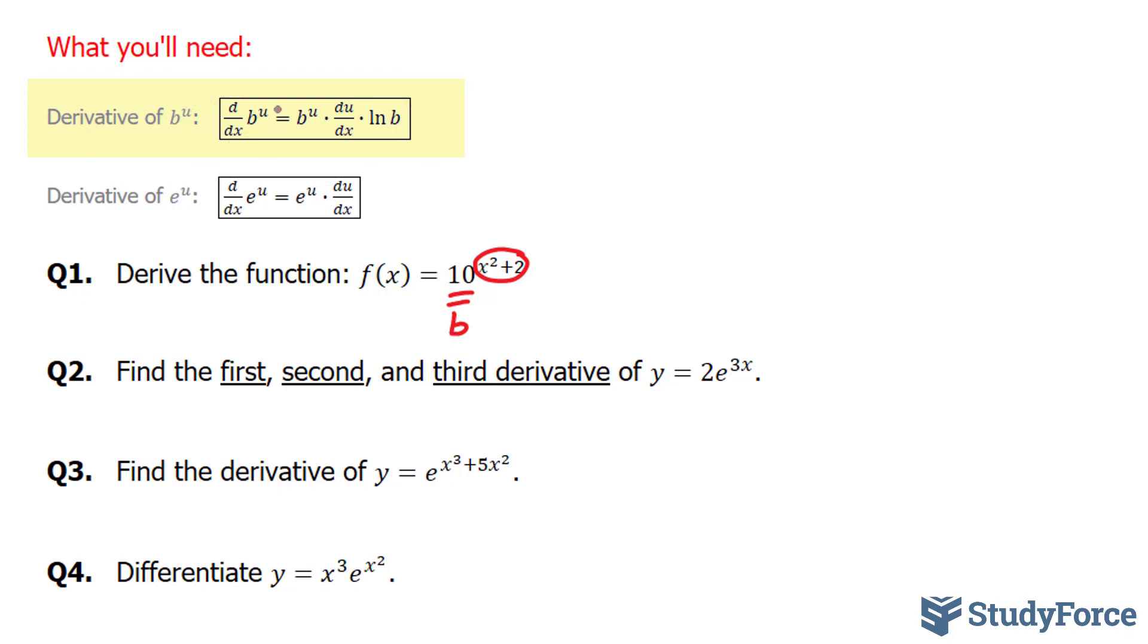According to this, our base is left the way it is and we'll denote the derivative of f(x) with f'(x) is equal to b which is 10^u, which is this part x^2 plus 2. Then we take the derivative of u.